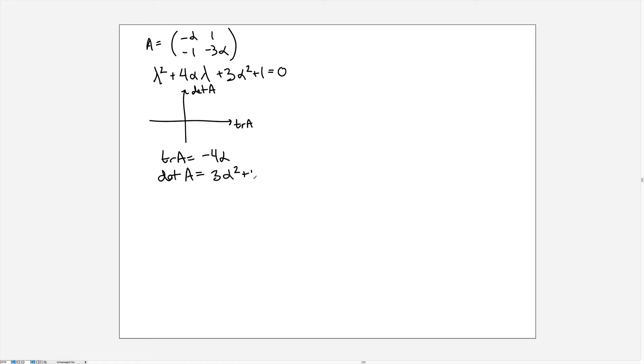and the determinant of A is equal to 3 alpha squared plus 1. So the curve that we really are interested in comparing to is the curve determinant of A equal to 1 over 4 trace of A all squared.